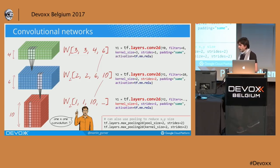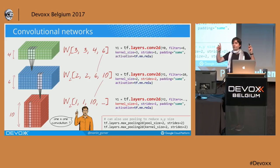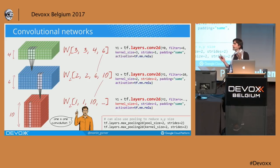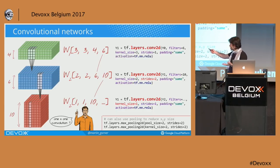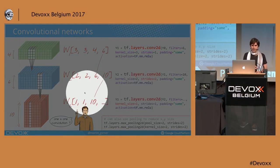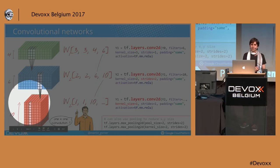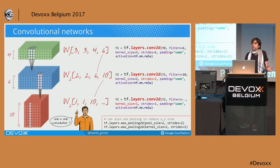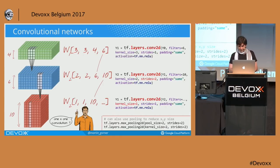One thing worth pointing out: a one-by-one convolution, which would surprise a mathematician, actually makes sense. A one-by-one convolution is a weighted sum of all the data points in a one-by-one column — there are still many data points there along the depth dimension, so you can do a weighted sum. A one-by-one convolution makes total sense, unless you're a mathematician. We are computer engineers.